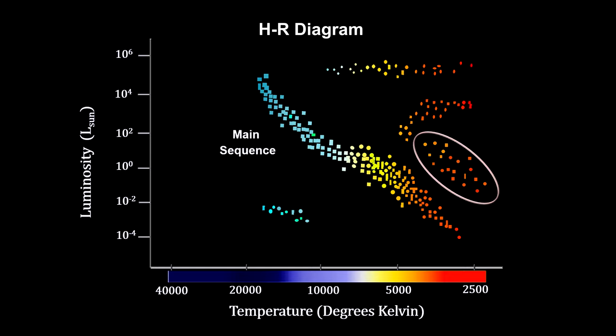T-Tauri stars would start here on the diagram. As they stabilize, they shrink in size, increase in temperature, start fusing hydrogen in large quantities, and migrate to the main sequence. The more massive the young stellar object, the higher up on the main sequence the eventual star will land.